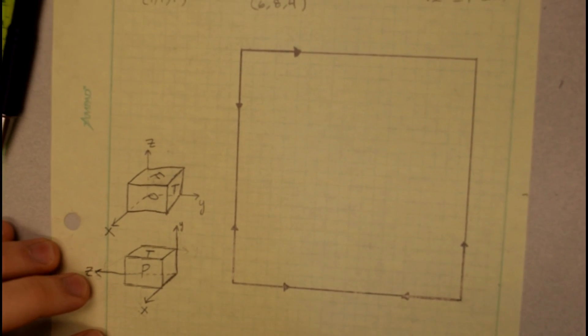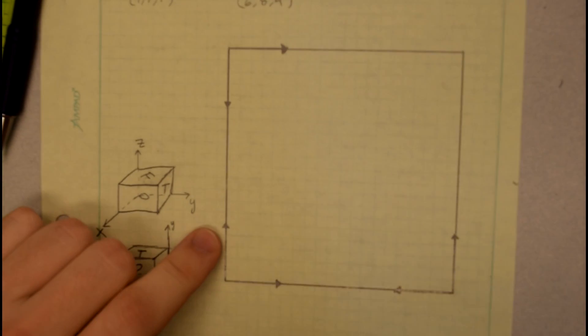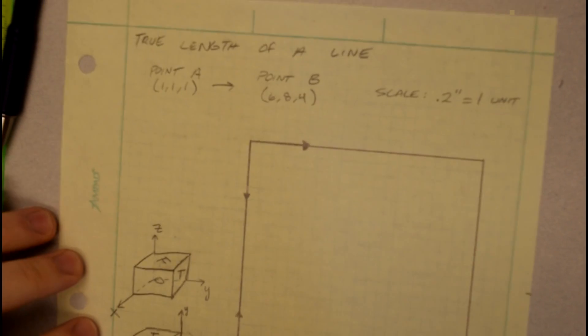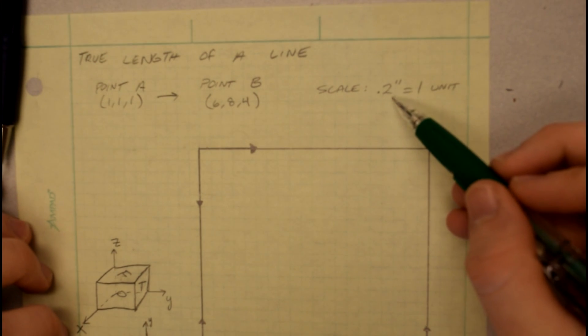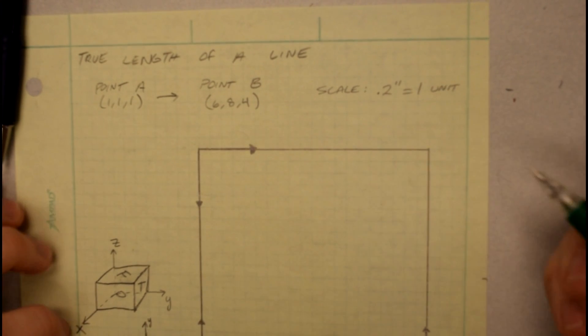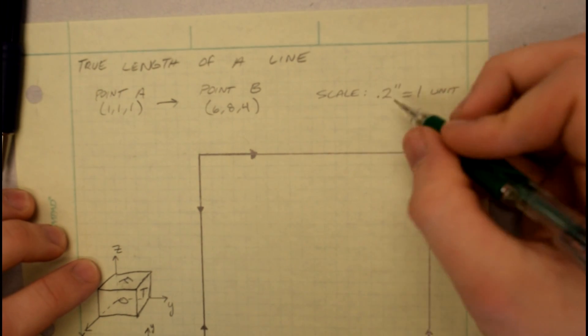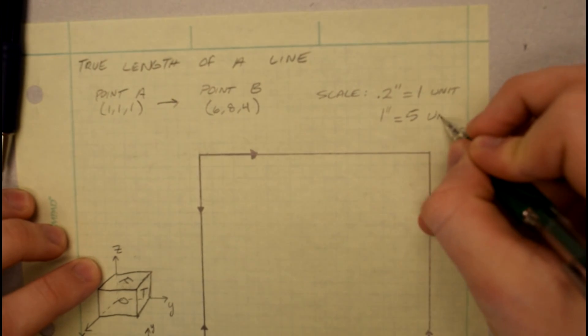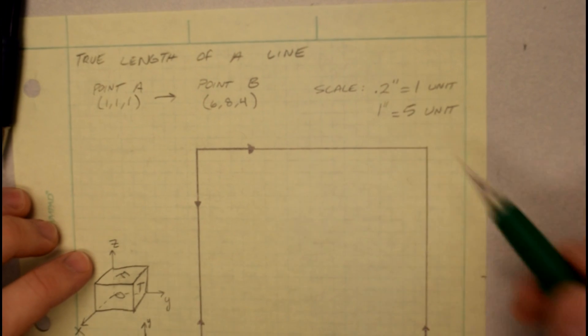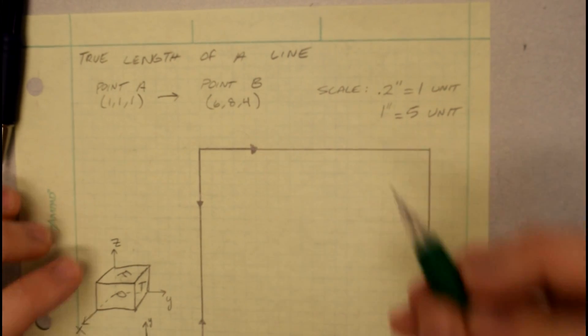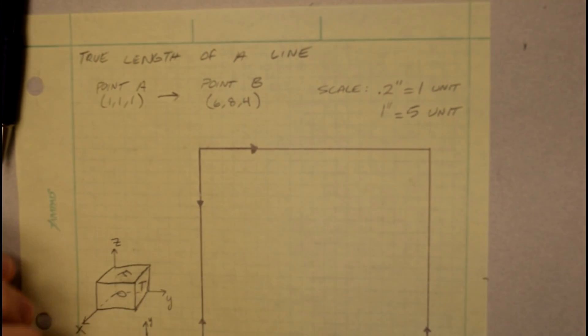So I've gone to the liberty of already drawing a square box and my axes here, I haven't labeled them yet. The scale of this drawing that I'm going to be using is 0.2 inches equals 1 unit. That corresponds to 1 inch equals 5 units. So that would be on my 50 scale. This is a good scale to use for engineering paper because these grids are actually 0.2 inches each. So if you're drawing a horizontal or vertical line, you don't need to use your scale. You can just count the grids if it's something close.